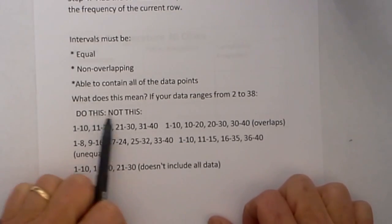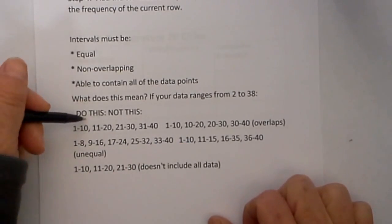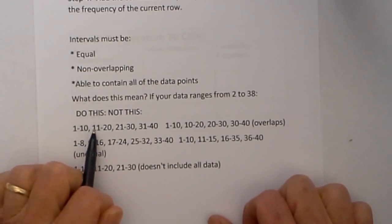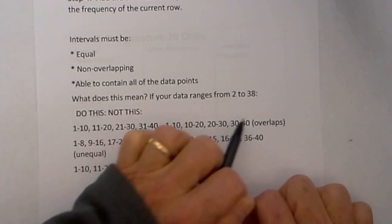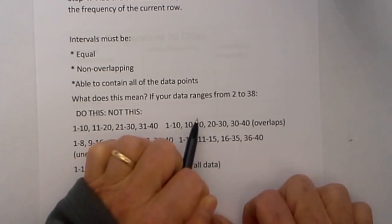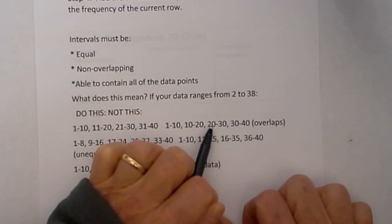Let's do this: 1 to 10, 11 to 20, 21 to 30. Notice there is no overlap. But look at this. We do not want to do this. Notice the overlap. We have 1 to 10. If you had 10, would you put it in this group or this group? Or 20, would you put it in this group or this group?